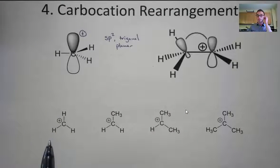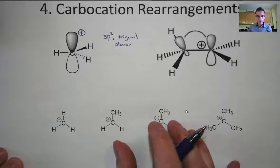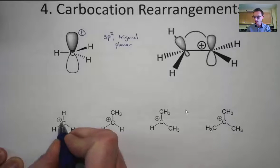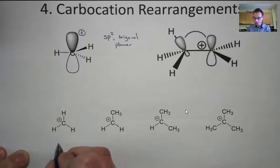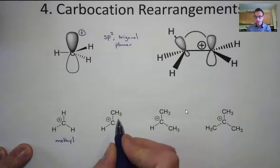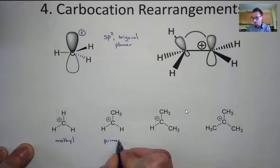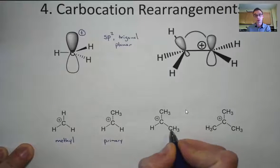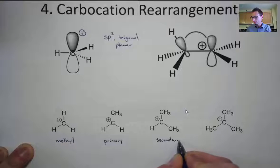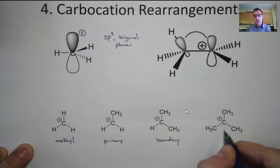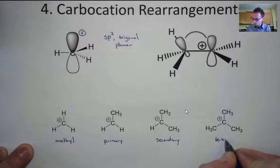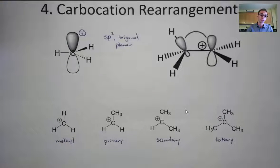Different types of carbons have different stability for a carbocation. Here are four different types: a carbon with a positive charge and three hydrogens is called methyl; one with one carbon and two hydrogens is primary; one with one hydrogen and two carbons is secondary; and one with three other carbons attached is tertiary. You're going to see this terminology come up again and again in organic chemistry. Methyl, primary, secondary, and tertiary carbocations have different stabilities.